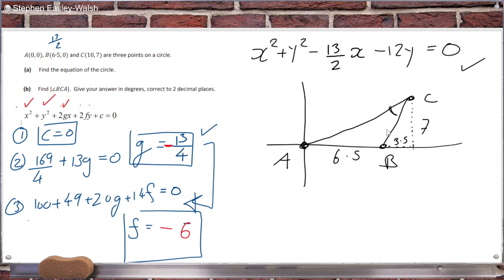So what would be the easiest thing to use here? Could I use a sine rule, cosine rule, or should I use the tan rule for the angle between two lines? Because I know this slope and I know this slope. So I might want to use the tan formula. So the slope of this line is 7 over 10. And then the slope of this line here, call that M2, that's 7 over 3.5, which is 2.